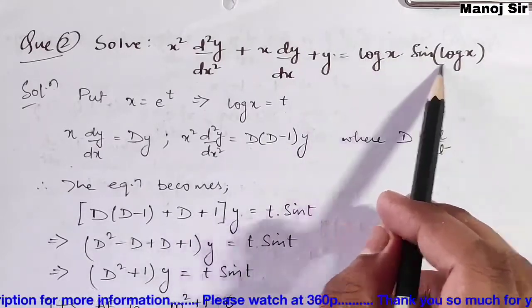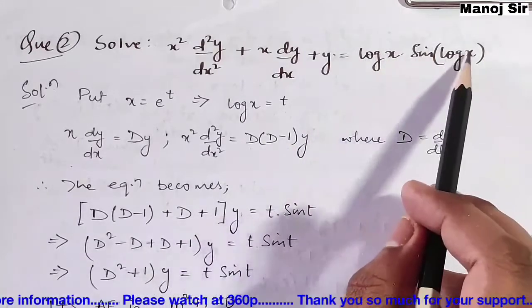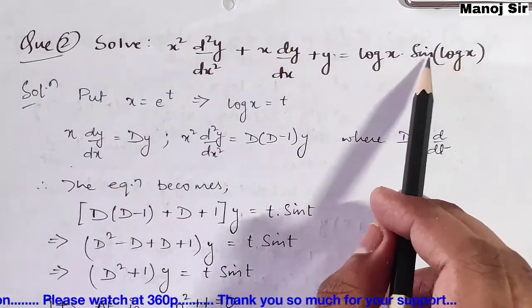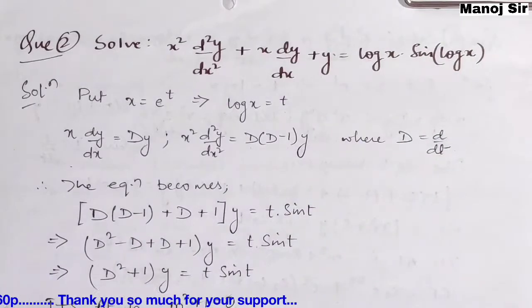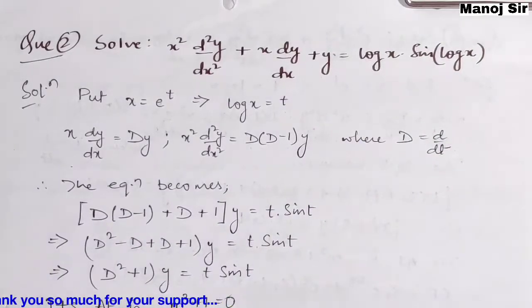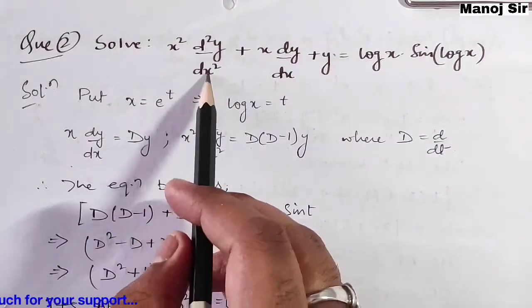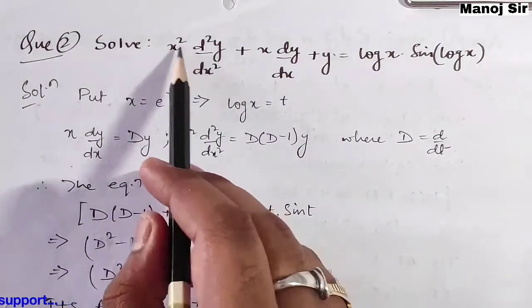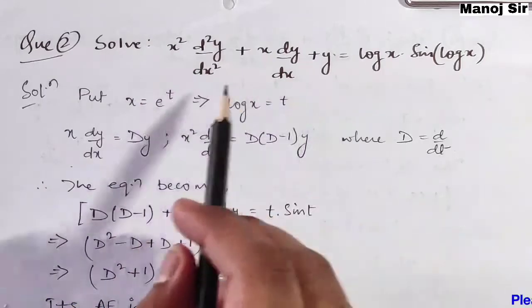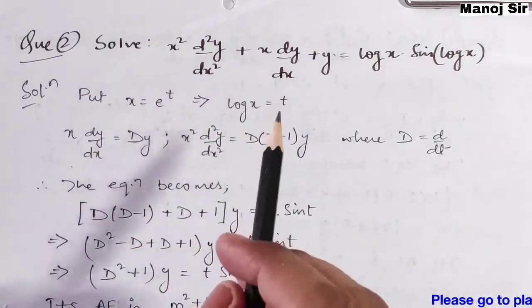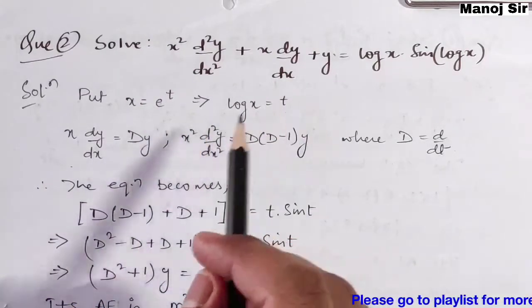Note that this log(x) is in multiplication with the expression, but this log(x) is inside the angle of sine. From here you can see x², x², x, x — so this question belongs to Cauchy's homogeneous linear equation.